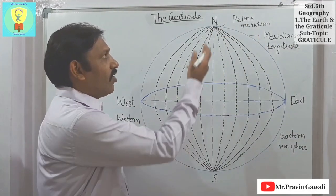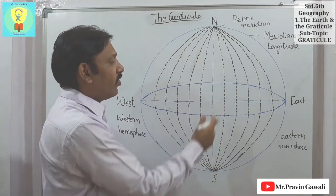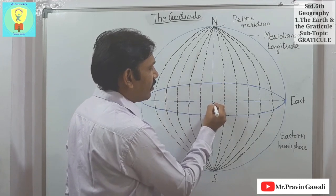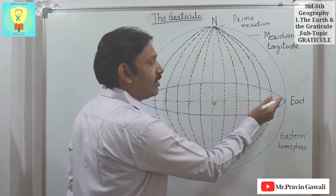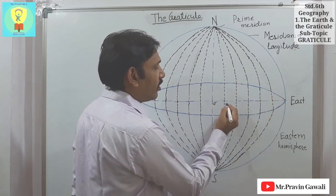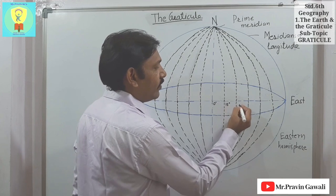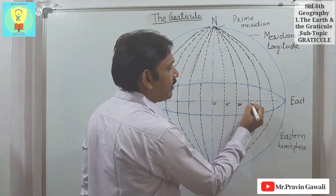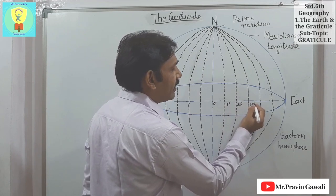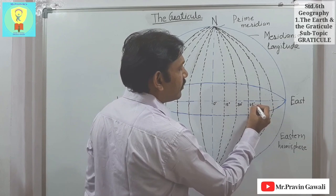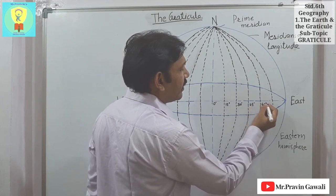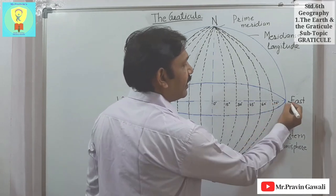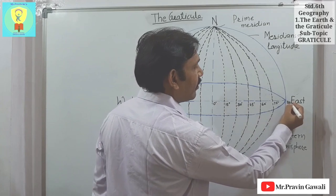These are the longitudes. I have drawn the longitudes at a particular interval of degrees. For example, this center is 0 degrees, and it goes on increasing. I have drawn these longitudes at an interval of 15 degrees: 15 degrees, 30 degrees, 45 degrees, 60 degrees, 75 degrees, and then 90 degrees.